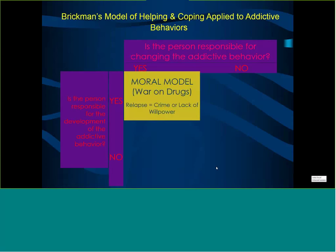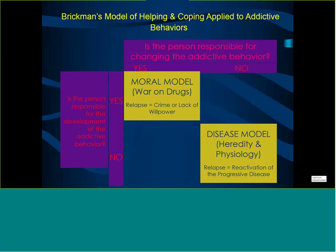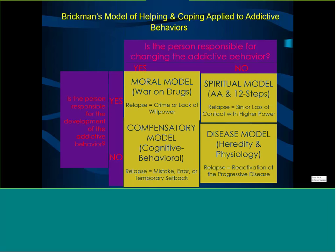This is a classic study examining models of helping and coping applied to addictive disorders. Starting with the moral model — the axis is whether the person is responsible for changing addictive behaviors and whether they are responsible for the development of the disorder. The moral model, which culminated in the war on drugs that became a fiasco, identifies people as responsible for both developing and changing addictive behavior. Relapse is seen as a crime or a lack of willpower.